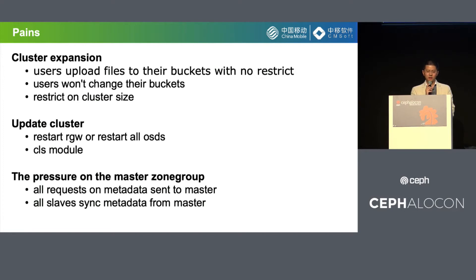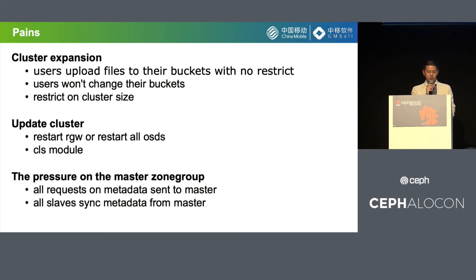Besides, the cluster size has its limits, so when the cluster becomes really huge, that is a serious problem. The second challenge is updates. Because the public cloud requires ongoing development — especially on RGW — we restart RGW when updating the clusters. But some modifications on RGW need to be done in the CLS RGW module, and when we modify that module, we must restart all the OSDs. In our cluster, the number of OSDs is really large, so restarting all of them is a very time-consuming operation.